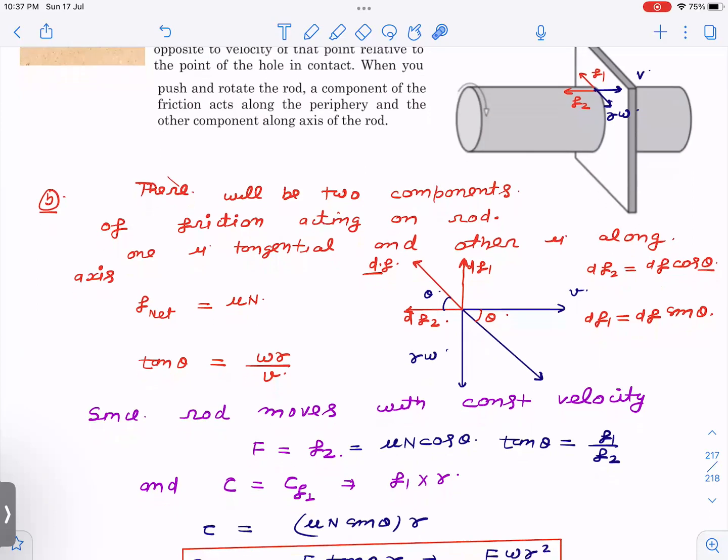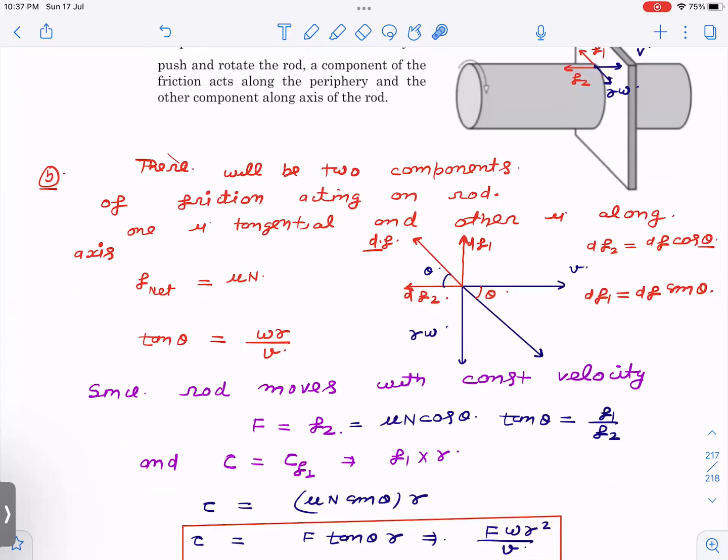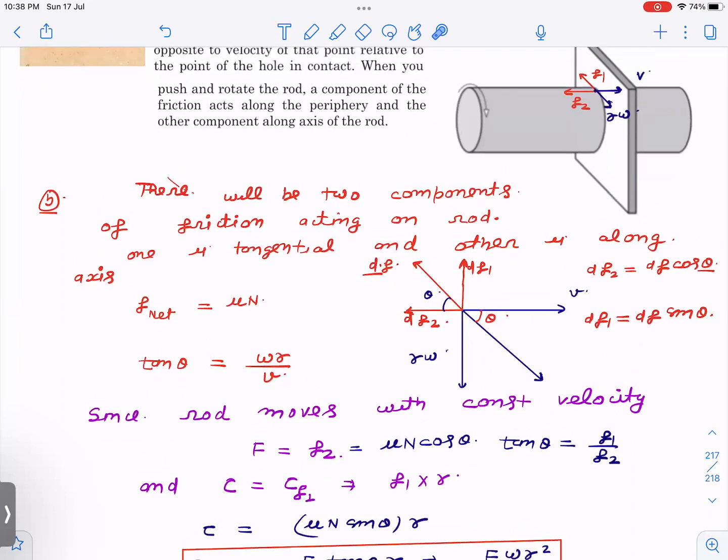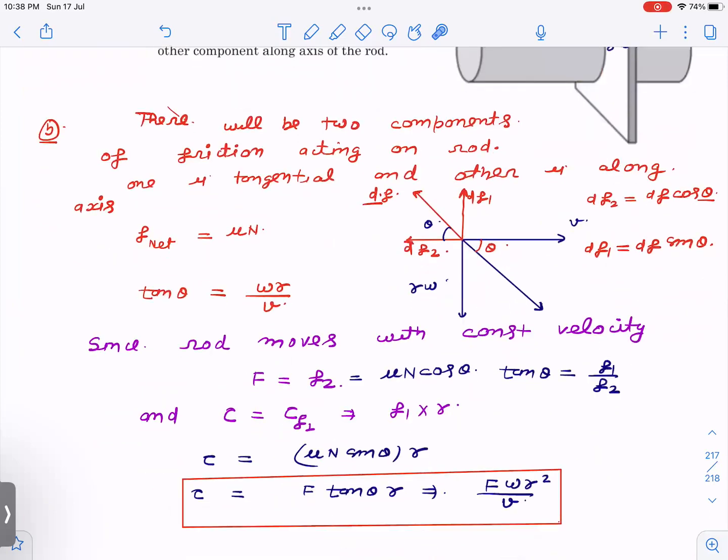So we need to find out the torque. Total torque will be f1 into r. R is constant. So when you integrate df1 it becomes f1. So f1 into r. What was f1? f1 was f sin theta, so mu n sin theta. Then this mu n value I have substituted from here. f was given. So mu n is f by cos theta. So that makes f tan theta into r. Tan theta we have already found in terms of given parameters, which is omega r and v. That is how you get torque equals f omega r square by v.